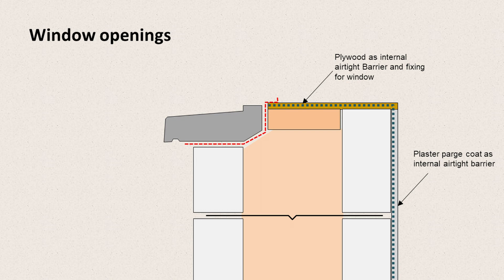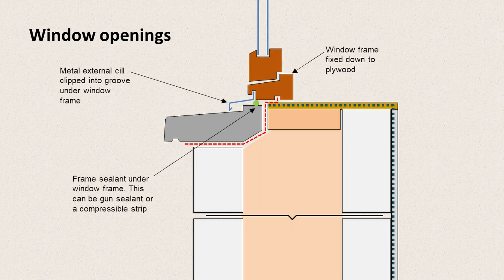On the top face of the opening we would use plywood, which we can also use as a fixing point for the window. Our window is installed — in this case it's a timber window with two parts: the fixed window frame, and the part that opens is the sash, which holds the double-glazed unit.